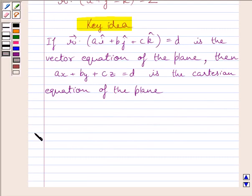Let us now start with the solution. Given equation of the plane is R vector dot (I plus J minus K) is equal to 2.